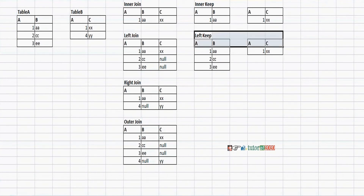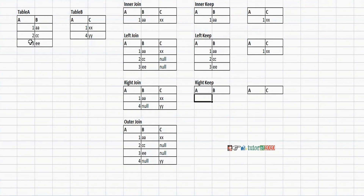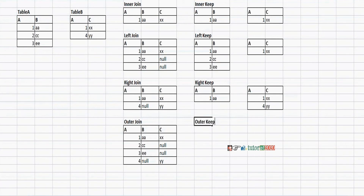Right keep means it will load the complete right side table and only matching records in the left side table. Note: in script you should not use 'Keep' or 'Outer Keep' as keywords. In Keep, we can only use inner keep, left keep, and right keep.